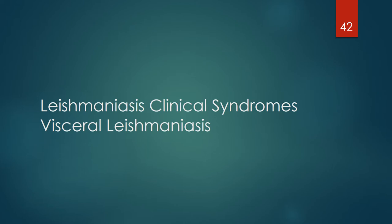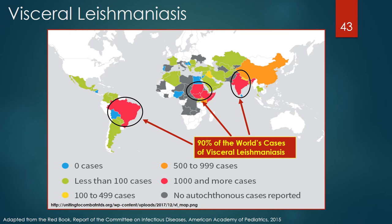Visceral leishmaniasis is found in focal areas of more than 60 countries: in the Old World in parts of Asia (particularly South, Southwest, and Central Asia), East Africa, the Middle East, and Southern Europe; and in the New World particularly Brazil. More than 90% of the world's cases occur in South Asia (India, Bangladesh, Nepal), East Africa (Sudan, South Sudan, Ethiopia), and Brazil. Some patients on the Indian subcontinent develop a darkening of the skin, giving rise to the term Kala-Azar, a Hindi word meaning black sickness.